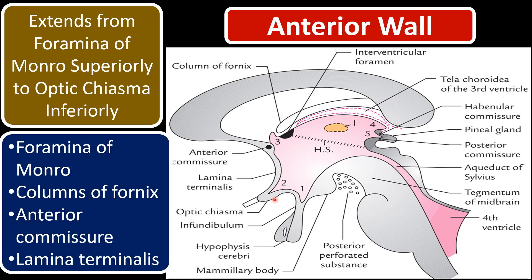The foramen of Monroe communicates with the right and left lateral ventricles respectively. You can identify the columns of the fornix, then the anterior commissure — through which commissure fibers pass — and then the lamina terminalis. So the structures present at the anterior wall are: interventricular foramen of Monroe, columns of the fornix, anterior commissure, and lamina terminalis.